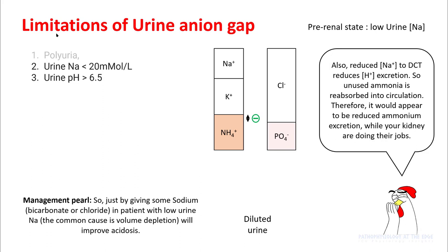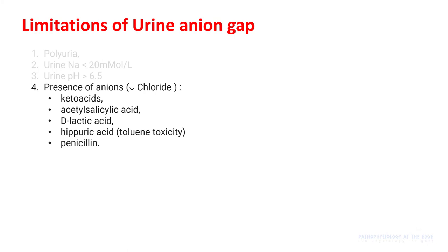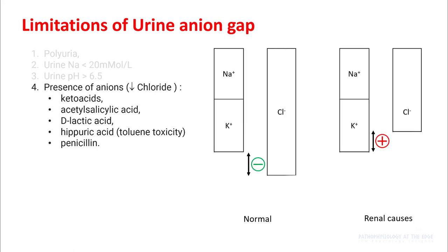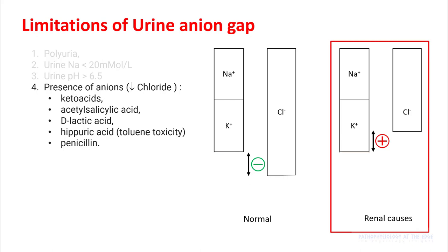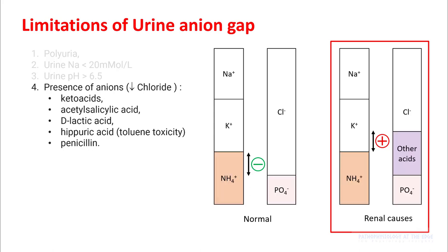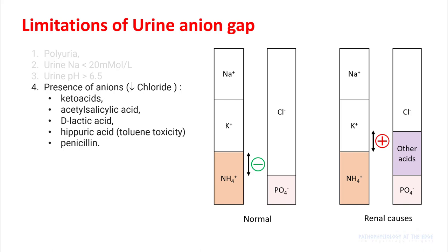In patients who are volume depleted, giving them sodium in any form — for example as bicarb or chloride — will help improve acidosis. Another problem is the presence of organic anions. For example, if your urine ion gap appears positive suggesting renal causes, look more closely — there may be other acids present in the urine like keto acids, acetylsalicylic acid, D-lactic acid, hippuric acid, or penicillin. These can reduce the amount of chloride in the urine and can falsely elevate your urine ion gap.